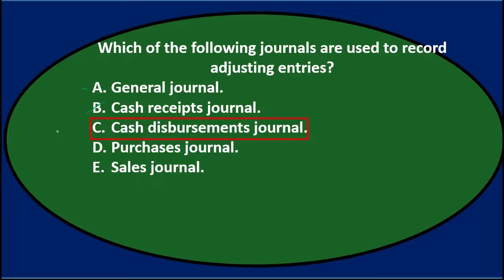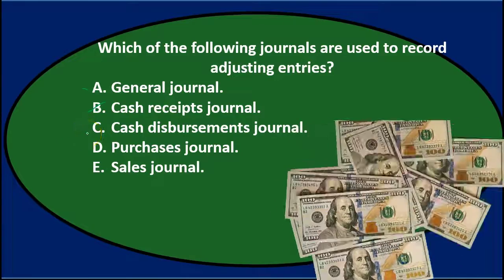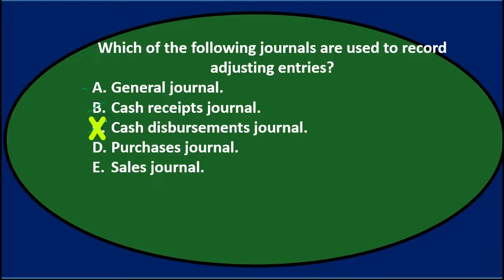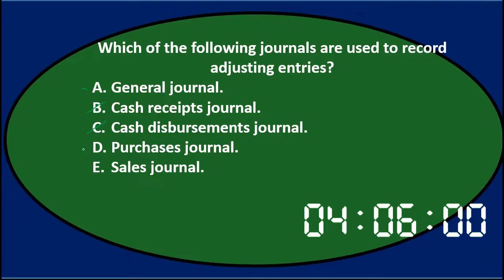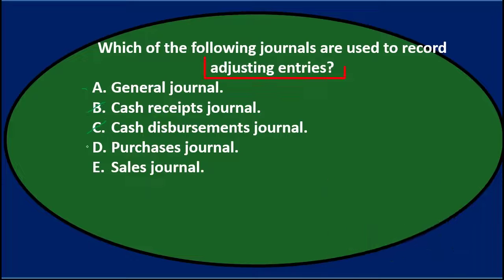C says cash disbursements journal — same reasoning; it's used during the process and cash isn't involved in most adjusting entries. D, the purchases journal, is fairly specific: it credits accounts payable and debits inventory or supplies. The adjusting entry doesn't necessarily fall into that format. E, the sales journal, debits accounts receivable and credits sales — that's a normal journal entry, not the adjusting journal entry we need.